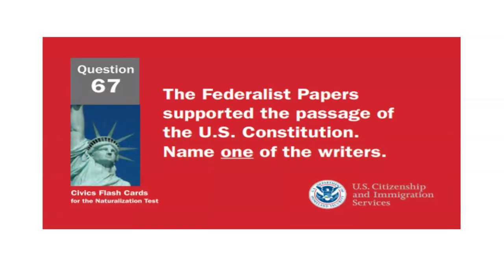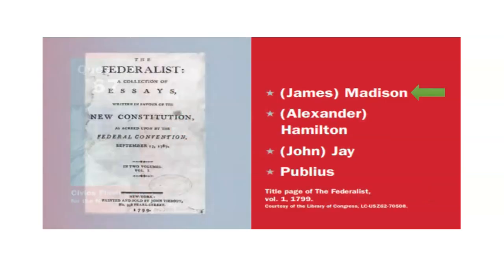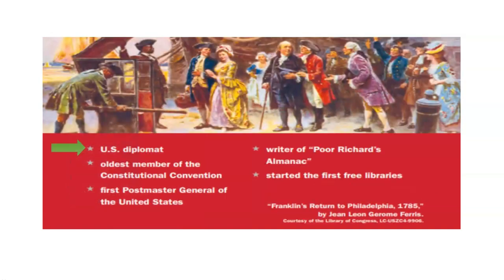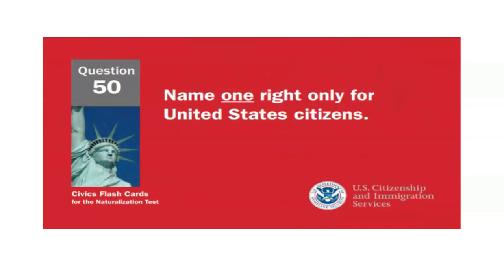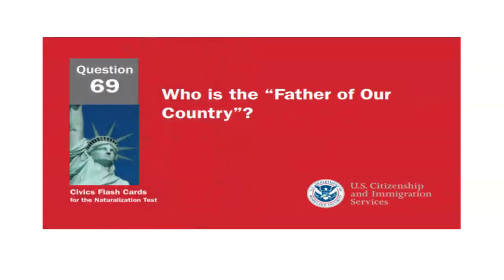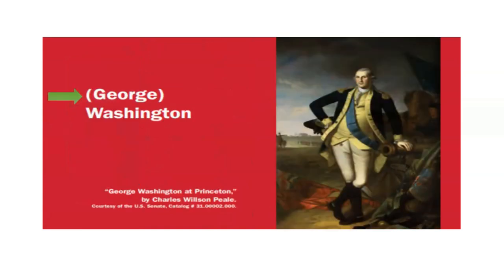The Federalist Papers supported the passage of the U.S. Constitution. Name one of the writers. James Madison. What is one thing Benjamin Franklin is famous for? U.S. diplomat. Name one right only for United States citizens. Vote in a federal election. Who is the father of our country? George Washington.